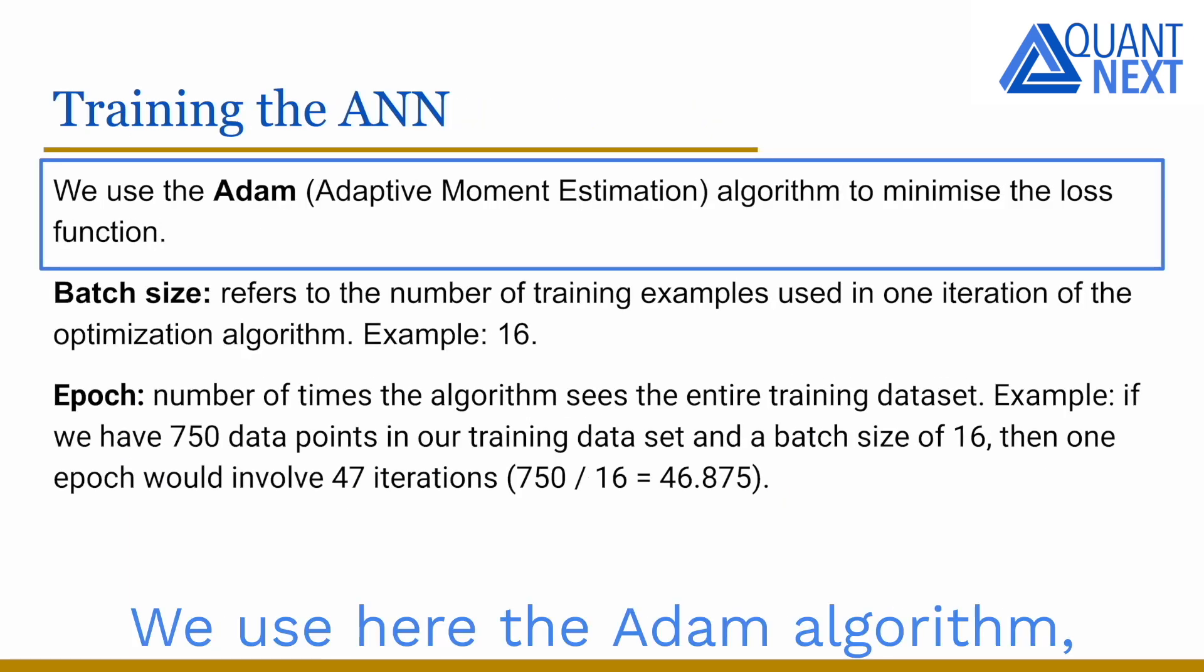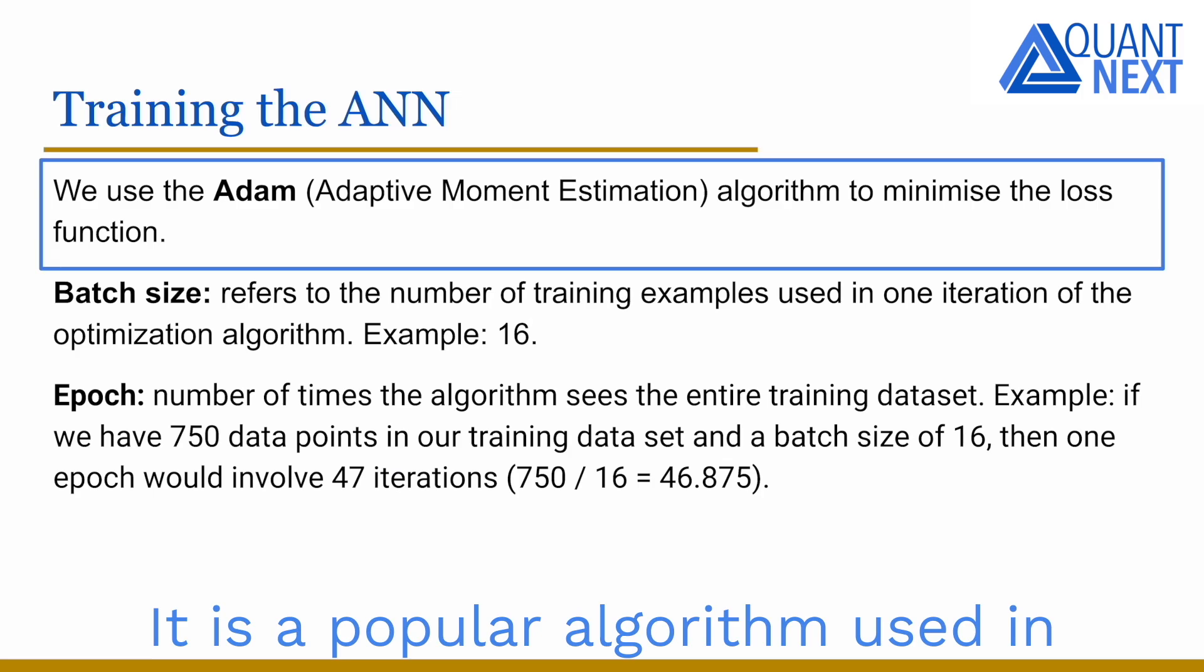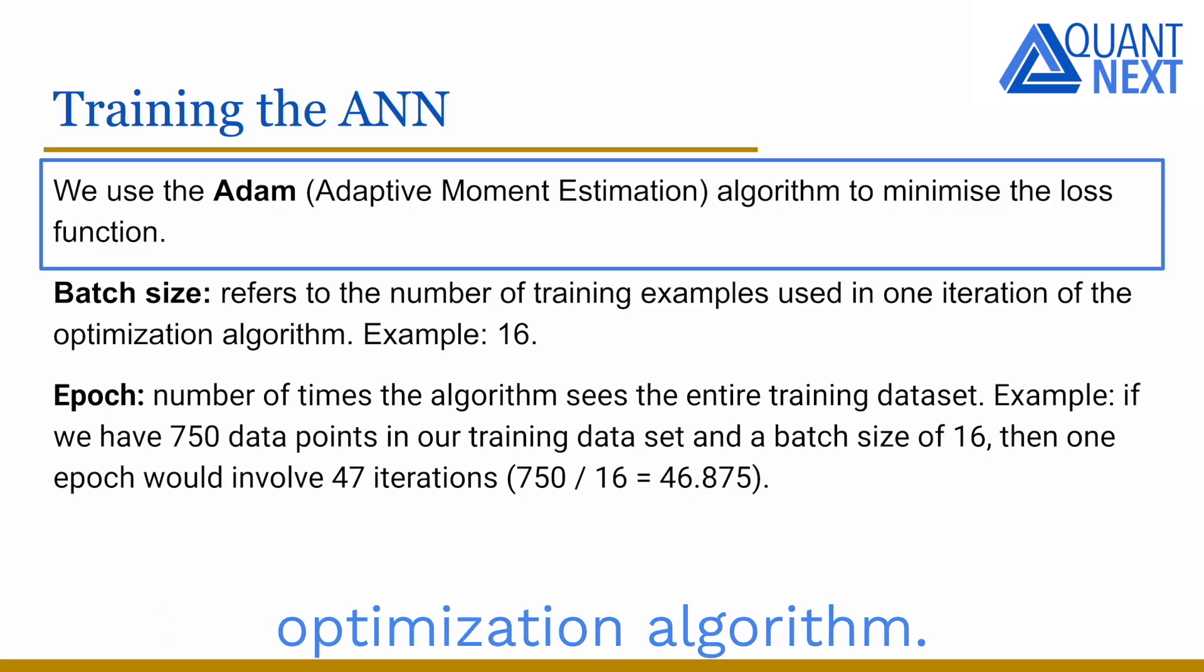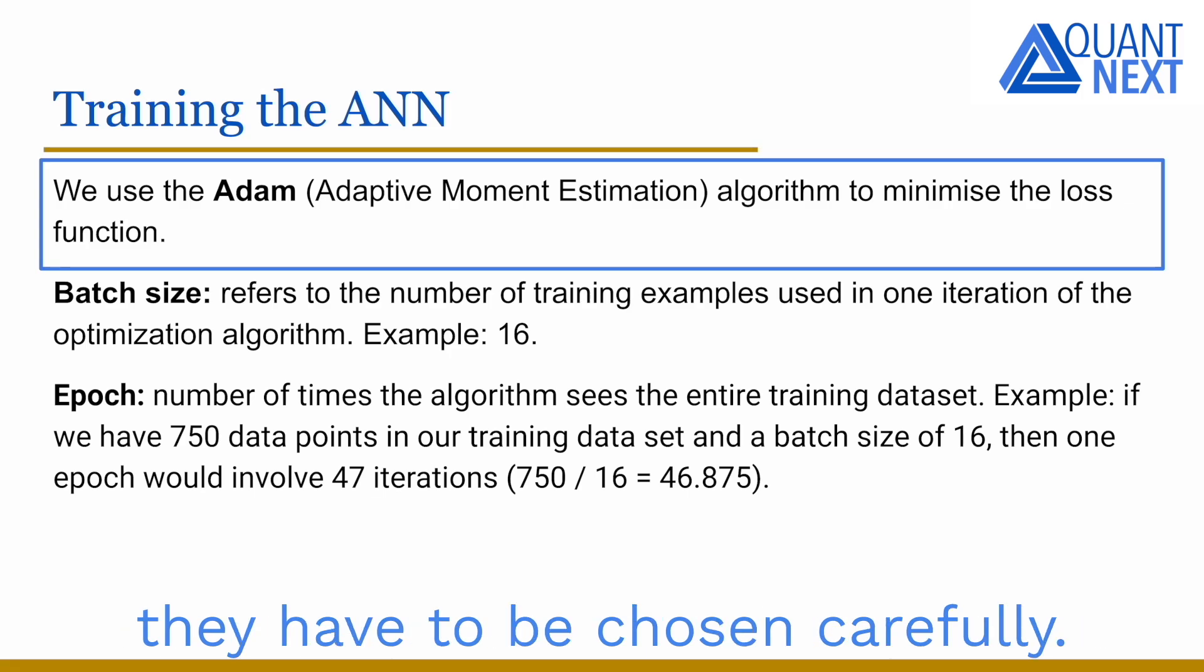We use here the ADAM algorithm, ADAM for Adaptive Moment Estimation, to minimize the loss function. It is a popular algorithm used in deep learning and particularly for training neural networks. It is an extension of the Stochastic Gradient Descent optimization algorithm. Two important inputs in the algorithm are the epoch and the batch size. They are both related to how the model learns from the data and they have to be chosen carefully.